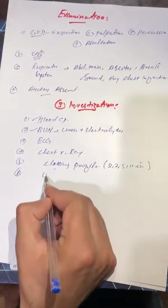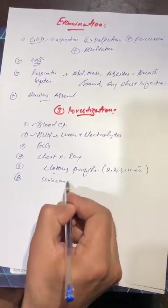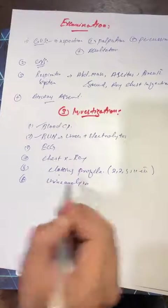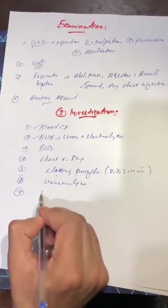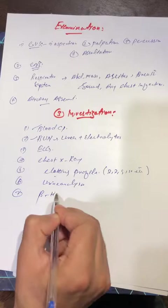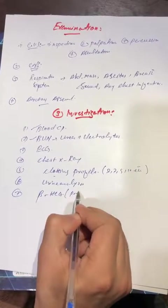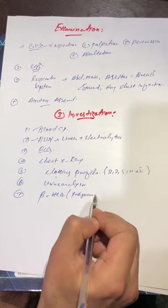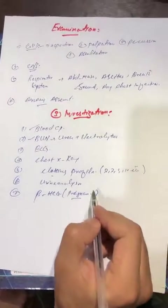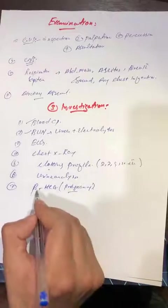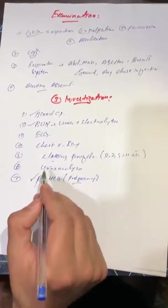Sixth, we will do urine analysis, and then we will do beta HCG test. Beta HCG test is actually for pregnancy, because sometimes the patient does not know whether she is pregnant or not, so we must do beta HCG test.